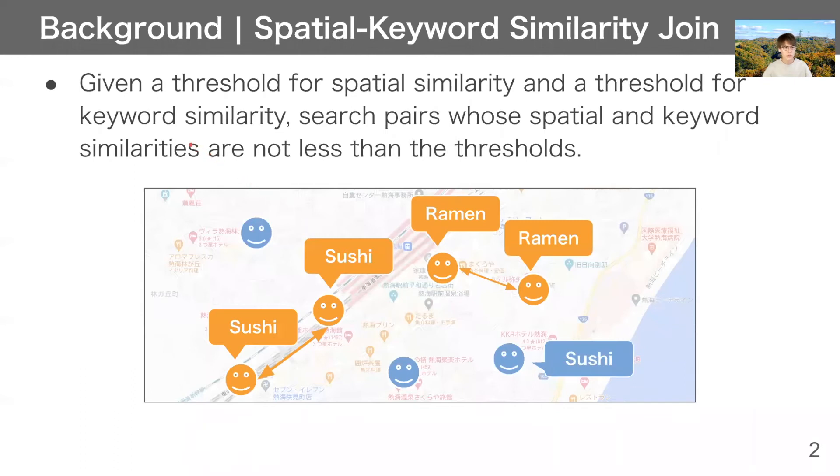Here is a background of our research, Spatial Keyword Similarity Join Problem. In this operation, given a threshold for spatial similarity and a threshold for keyword similarity, we search pairs whose spatial and keyword similarities are not less than the thresholds.